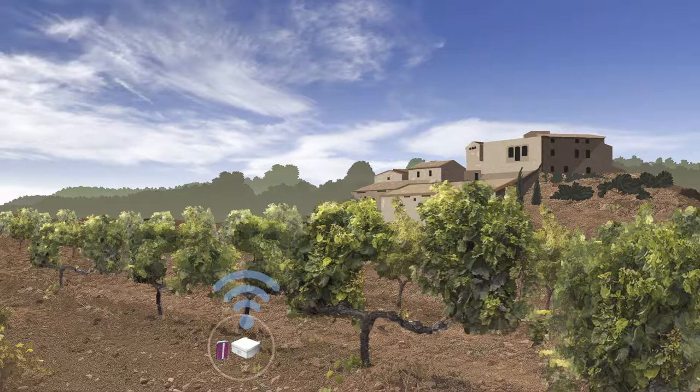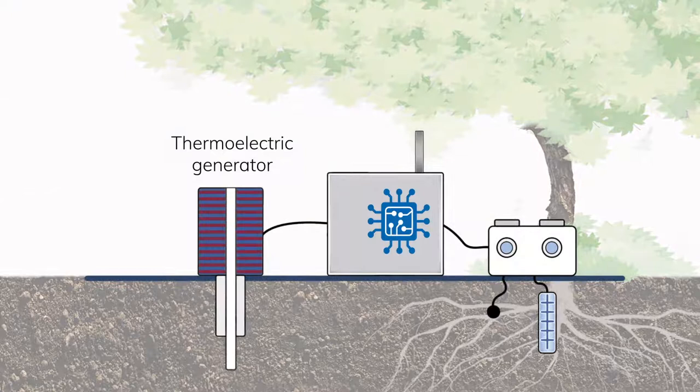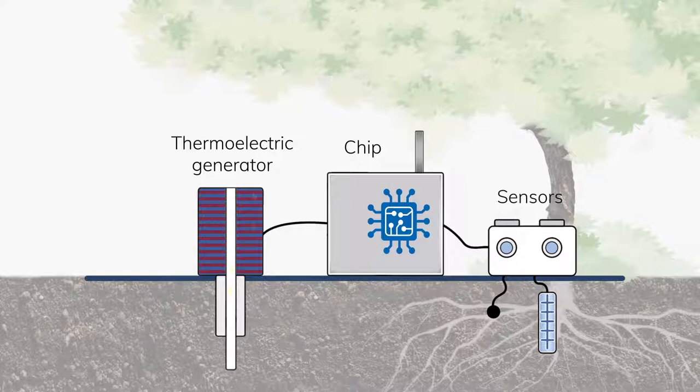Each data logger is made up of three parts: a thermoelectric generator, the control system based on microelectronics which also includes a radio frequency antenna, and the sensors.